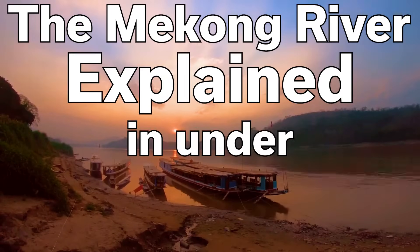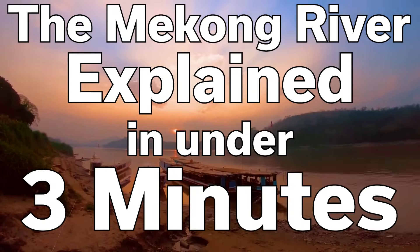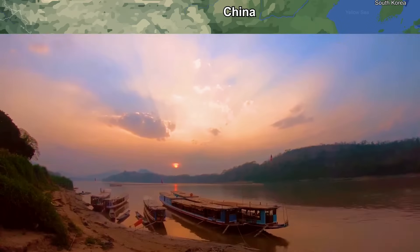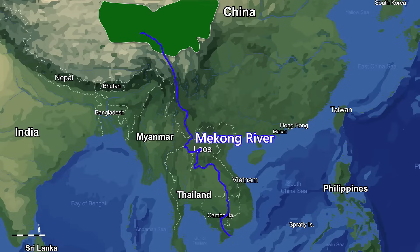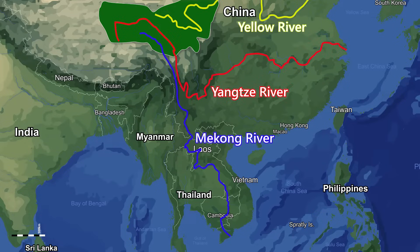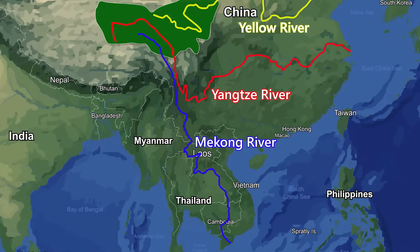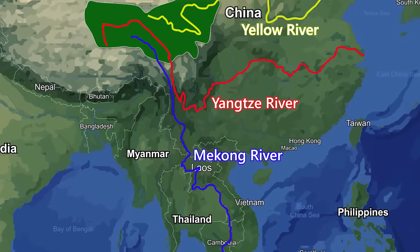The Mekong River explained in under 3 minutes. The headstream of the Mekong River starts in the Sanjianyuan National Nature Reserve, which is also the birthplace of Asia's longest and second longest rivers, the Yangtze and the Yellow River. All three start their flow less than 500km away from the Mekong, but end up taking completely different courses through Southeast Asia.